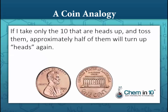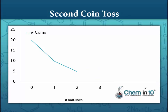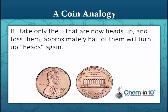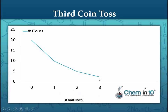If I take only the 10 that are heads up and toss them, approximately half of them will turn up heads again. So let's say I now have 5 heads, and I remove the tails coins from the pile. At half-life number 2, I now have 5 coins remaining. If I take only the 5 that are now heads up and toss them, approximately half will turn up heads again — let's say I get 2 heads. Therefore, at half-life number 3, I now have 2 coins.